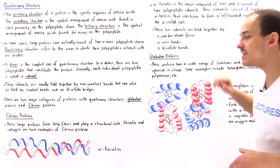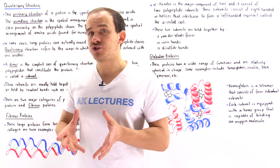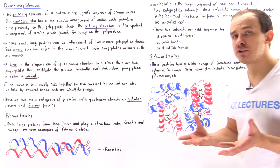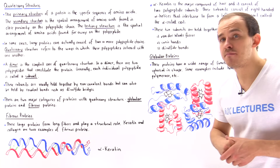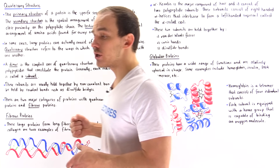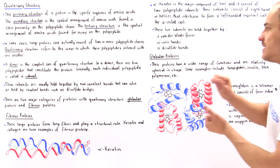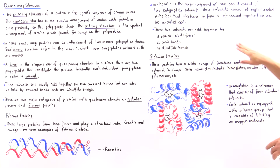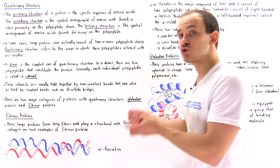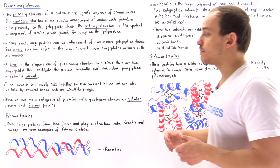We also have ionic bonds between the negatively and positively charged side chains, hydrogen bonds, and a covalent bond known as a disulfide bond or disulfide bridge — formed between two adjacent cysteine amino acids. The more disulfide bonds present in alpha keratin, the stronger and more rigid that protein is.